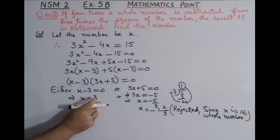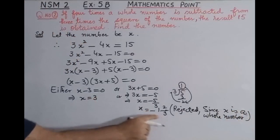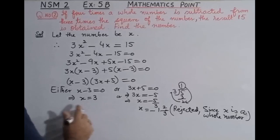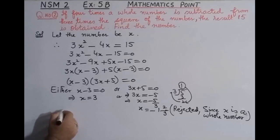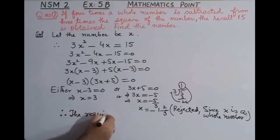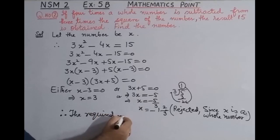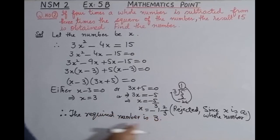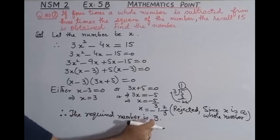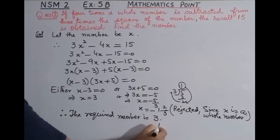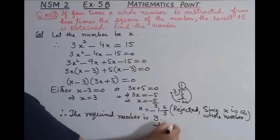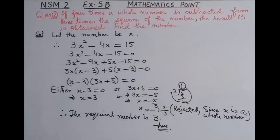Since the other value is rejected, the only remaining value is x = 3. Therefore, the required number is 3. That is our answer for question number 2. I hope students have understood this question.